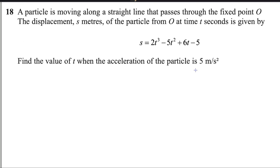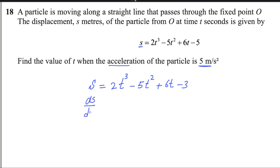Question number 18. A particle moves along a straight line through fixed point O. Displacement s metres at time t seconds is given by s equals 2t³ minus 5t² plus 6t minus 5. Find the value of t when acceleration equals 5 m/s². Differentiating displacement with respect to time gives velocity: ds/dt equals 6t² minus 10t plus 6.